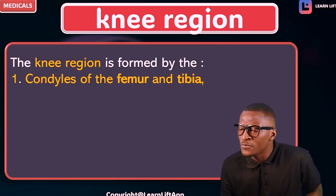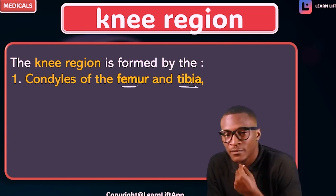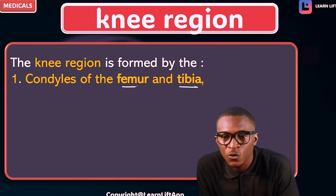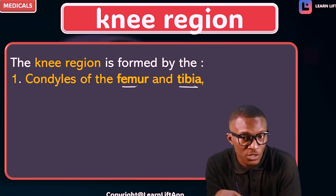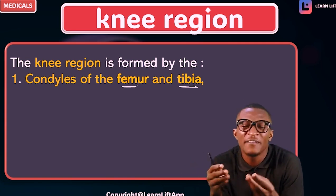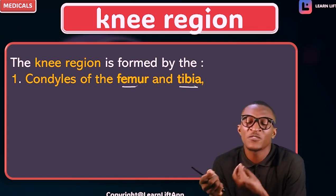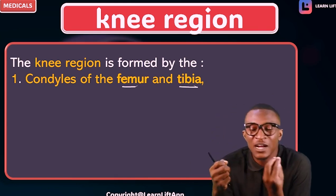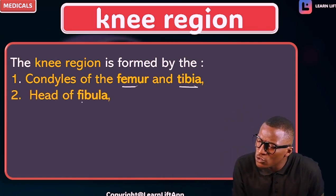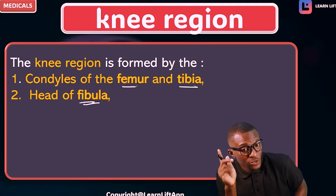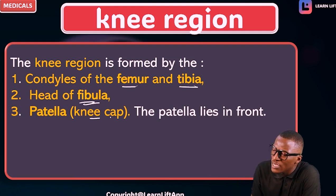Now let's talk about the knee region. Take note that the knee region is formed, number one, by the condyles of the femur and the tibia. The femur has a superior articulation and an inferior articulation. At the inferior articulation we have the condyles of the femur — the medial condyle and the lateral condyle — as well as the lateral and medial condyles of the tibia. The second structure that forms it is the head of the fibula, and number three, the patella, also called the kneecap.